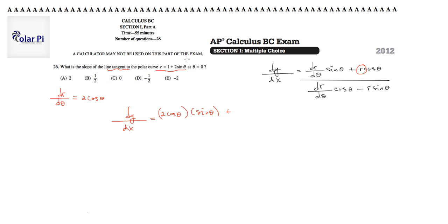Plus r. Well, notice r is given here as 1 plus 2 sine theta. So 1 plus 2 sine theta, r, times cosine theta. Got it. Times cosine theta.